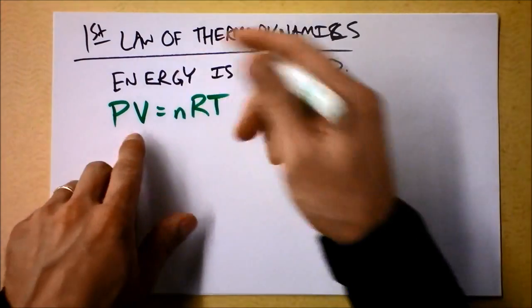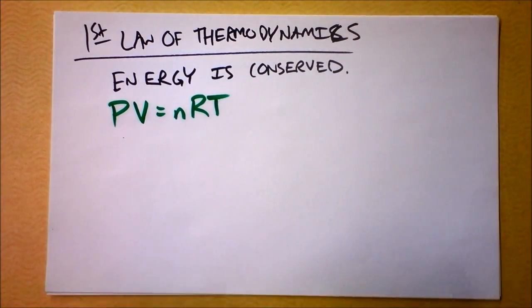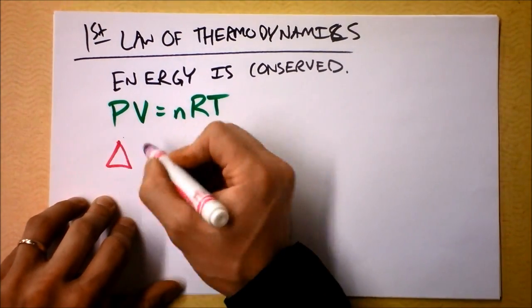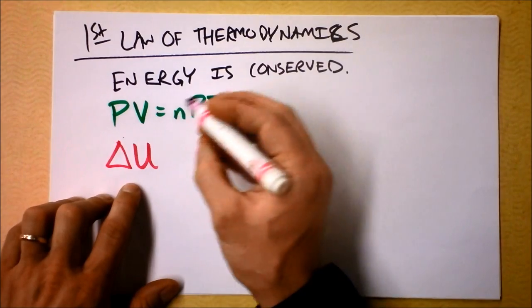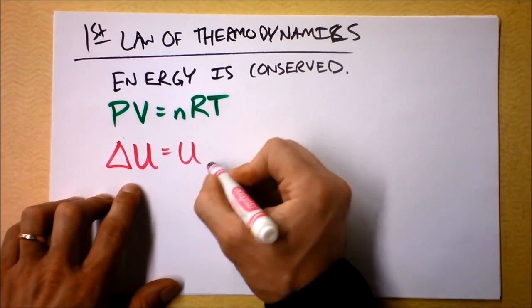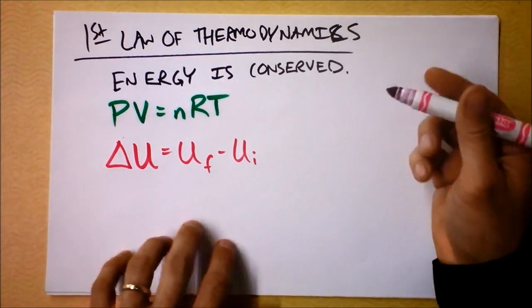And this is the energy in a gas, and so if I were to say that this is changing, I could get a change in energy of the system. Delta U will be the change of the total energy of the system. I guess it's going to be U final minus U initial.